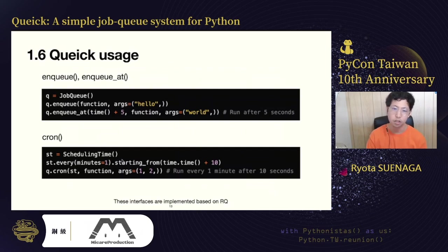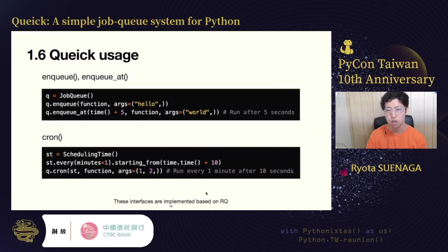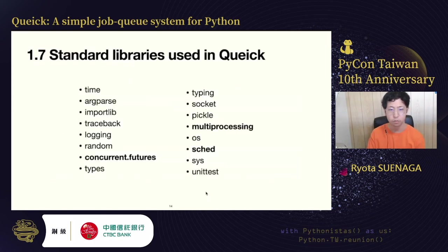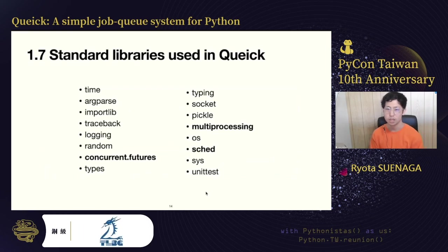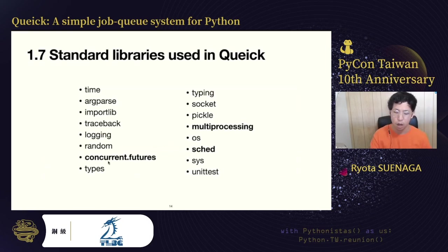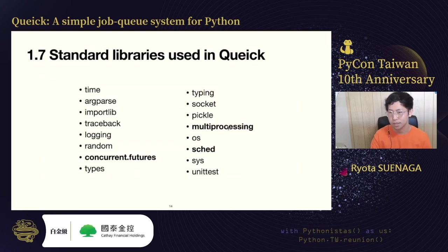Periodical job execution is also supported by the Qwik method with a scheduling time class. This class is designed for specifying intervals. I implemented this interface based on RQ, an existing job queue system in Python. Qwik is made of only standard libraries, including concurrent.futures, multiprocessing, and socket, which are especially fully utilized.